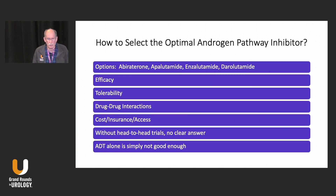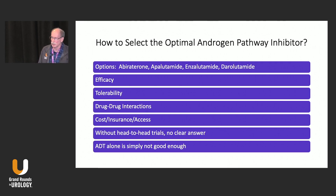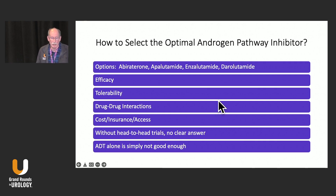Another question I get a lot is how to select the optimal androgen pathway inhibitor. Our options include abiraterone — a biosynthesis inhibitor — and three androgen receptor inhibitors, grouped together as androgen pathway inhibitors. Similar to other areas in urology like ED or OAB, the drugs are very similar in efficacy, and it's really tolerability that sets them apart and often drives drug choice. Drug-drug interactions can also play a role, and sometimes it comes down to cost, insurance, access, or simply familiarity.